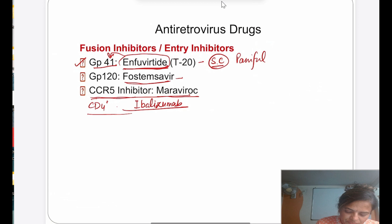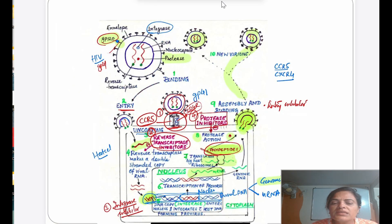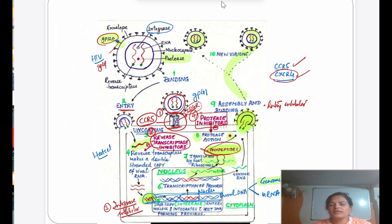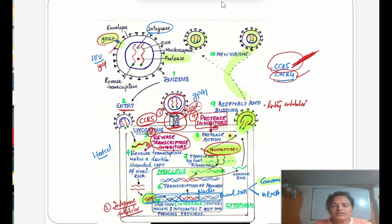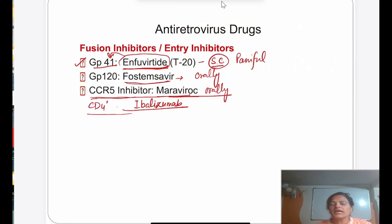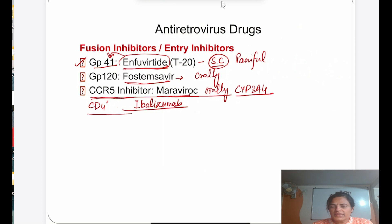For Fostemsavir — it is given orally. One important point: there are two types of co-receptors — CCR5 on macrophages and CXCR4 on CD4 cells. This drug group is effective only if the relevant receptor is present, so the virus must show the appropriate tropism. It is also used as add-on therapy, and it is metabolized by CYP3A4, so various drug interactions with enzyme inhibitors and inducers should be noted.